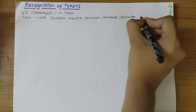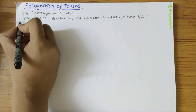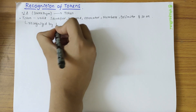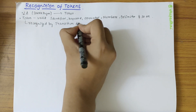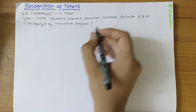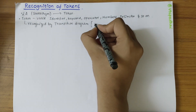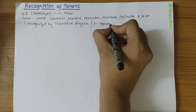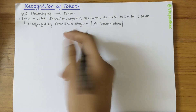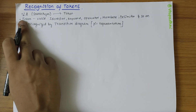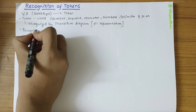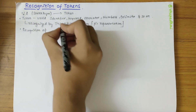These tokens are recognized by using the transition diagram. A transition diagram is a pictorial representation of moving from one state to another state by some input symbol. Let's consider all the possible tokens and see how they are recognized, starting with the recognition of an identifier.